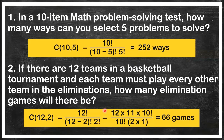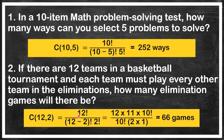Second problem: there are 12 basketball teams and we need two teams to play against each other. This is a combination problem kasi hindi naman nagmamatter kung sino yung mauna or sino yung pangalawa — basta sila yung magkalaban. Using the combination formula with N = 12 and R = 2, we expand 12 factorial as 12 times 11 times 10 factorial, which cancels with 10 factorial in the denominator. The answer is 66 games in all — 66 elimination games.